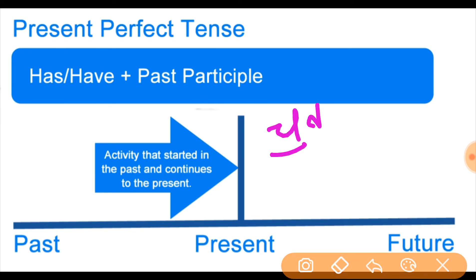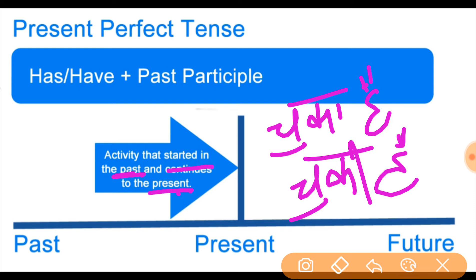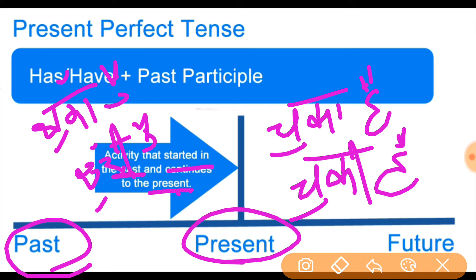The present perfect tense is used for an activity that started in the past and continues into the present. The activity started in the past and is still going on in the present. It can also describe work that was completed in the past with relevance to the present.